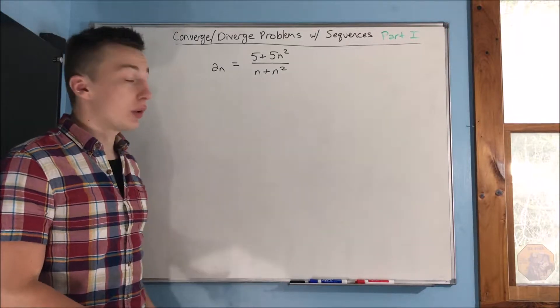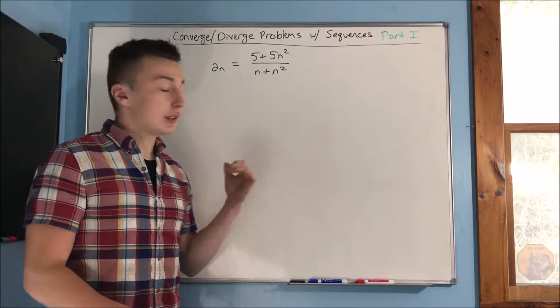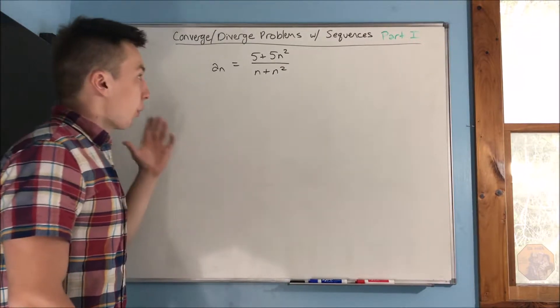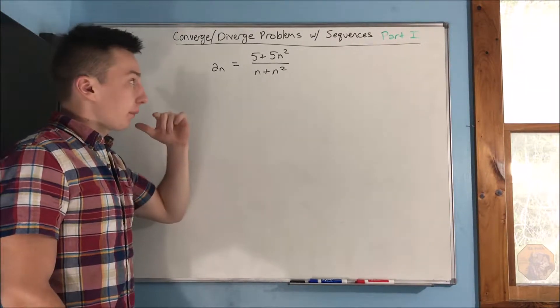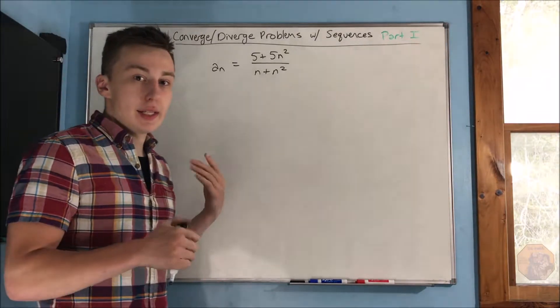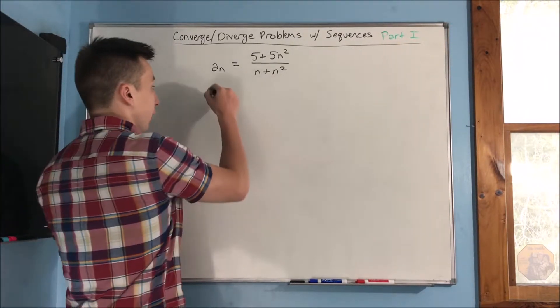All right, so this is going to be part one of our convergent-divergent problems with sequences. So we want to find whether this sequence is going to converge or diverge. All we have to do here is take a limit as n approaches infinity.